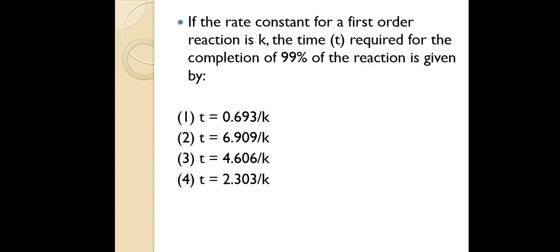The question goes: if the rate constant for a first order reaction is k, the time t required for completion of 99% of the reaction is given by — and four options are given. What we need to understand is the relationship between rate constant and time, which is the integrated rate equation for the first order reaction.